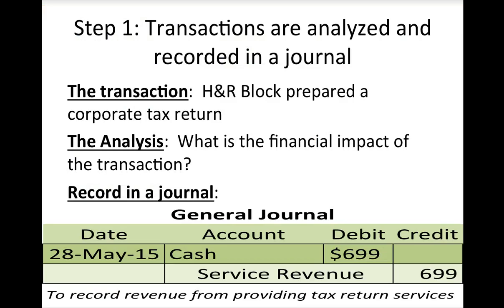Let's take each step individually. Step one says transactions are analyzed and recorded in a journal. For example, H&R Block prepared a corporate tax return. The analysis: what is the financial impact? We received cash and it was revenue, so the two accounts affected are cash and revenue. We would record in a journal that cash increased by $6.99 and service revenue increased by $6.99, using debits and credits, which we learned in chapter two. There is a tutorial on debits and credits available if you'd like to review those rules.